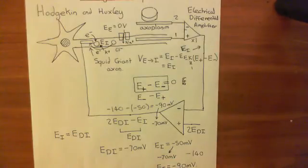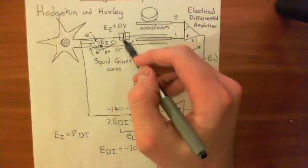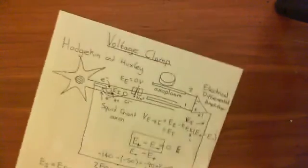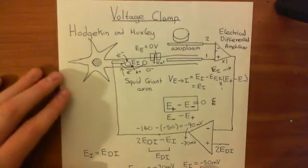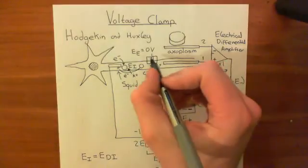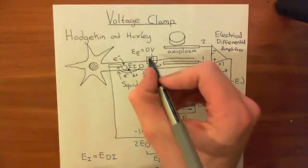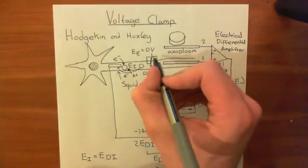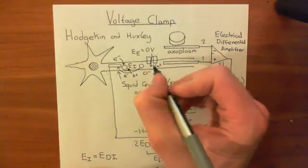Now let's see how we can use this system to measure the current that is moving through voltage-gated sodium channels and coming into our squid giant axon. Let's say we have triggered an action potential in our neuron and we now want to measure this current of sodium coming through these channels.